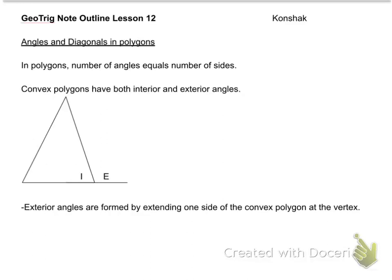GeoTrig, lesson 12. Today we're going to talk about angles and diagonals of polygons. Before we get into that first note, we should back up and say, wait a minute, I've heard polygon before. I think back in lesson 1, what is a polygon? Someone's going to say a triangle, someone will say a square. Sure, those are examples of polygons. What is, by definition, a polygon?